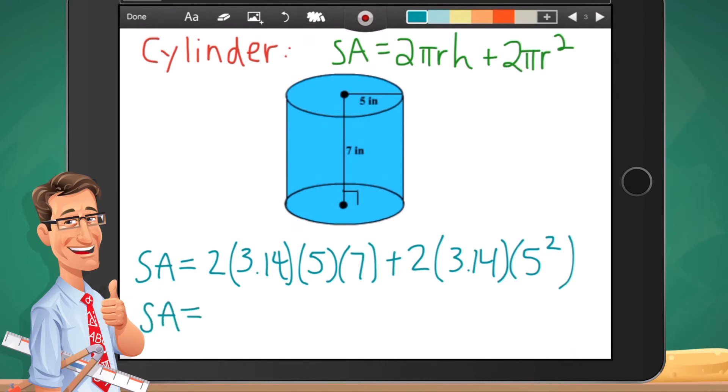So 2 times pi times 5 times 7 is going to get you 219.8, plus 2 times pi times 5 squared, which would get you 157. Add them up and you should get your final answer of 376.8 inches squared.